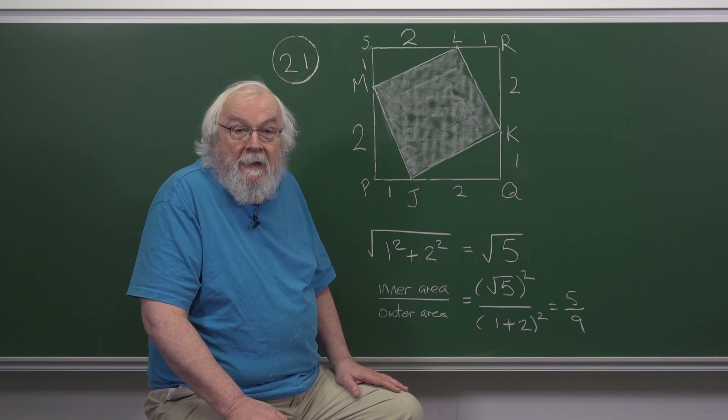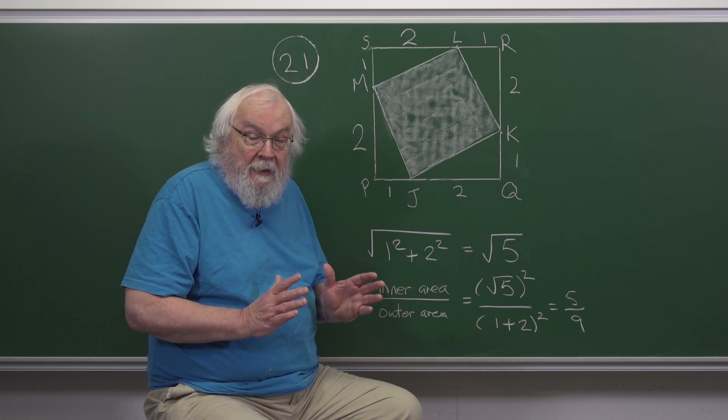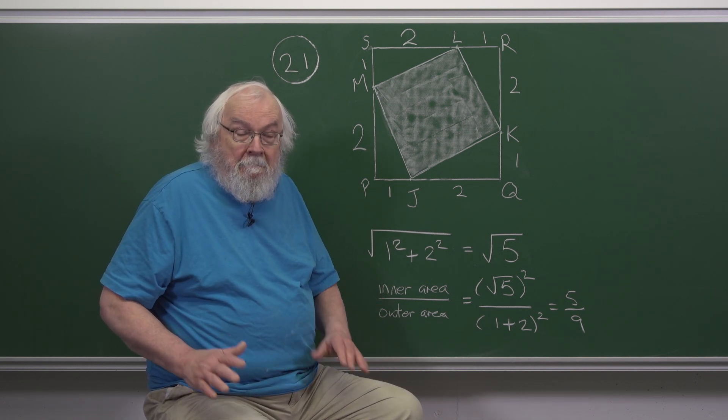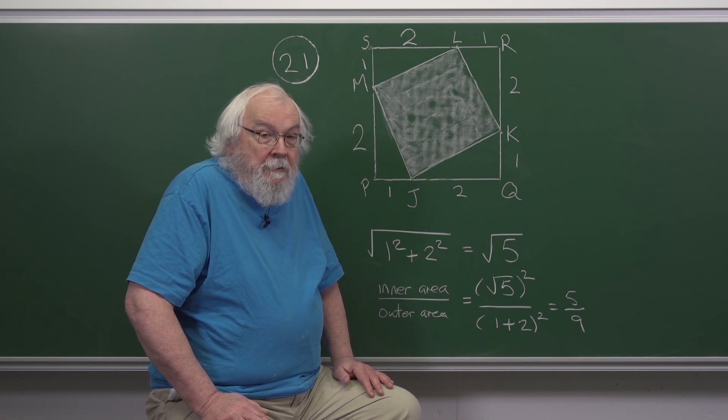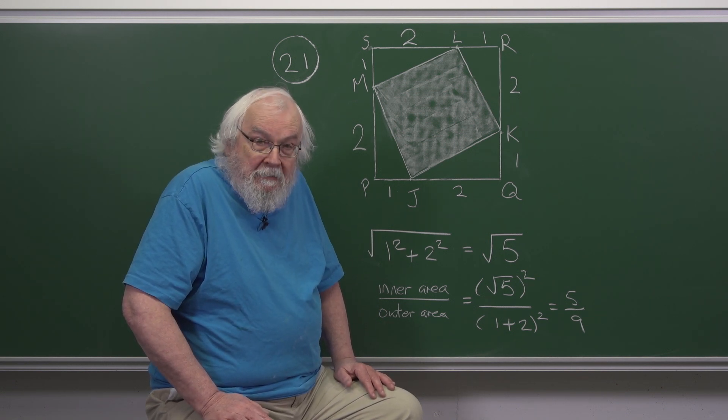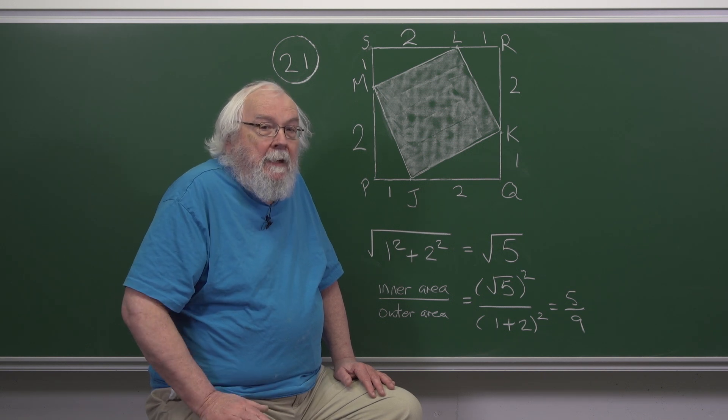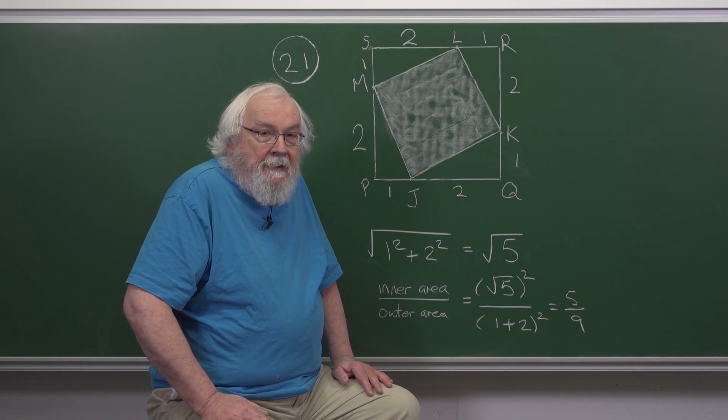We're supposed to find the ratio of the area of the smaller square to the bigger square. And there are two ways of doing this. I'm going to show you a method which uses Pythagoras' theorem, but there's another way that doesn't deploy that technique.